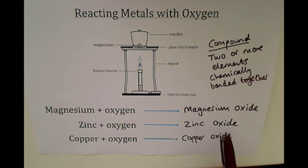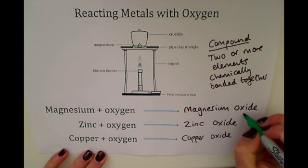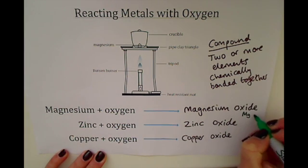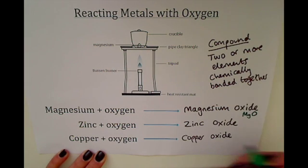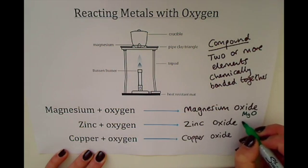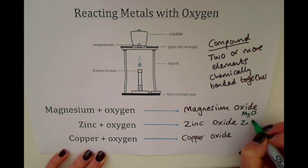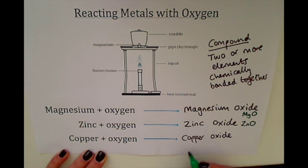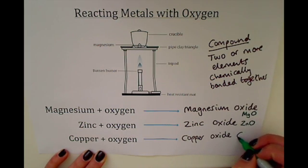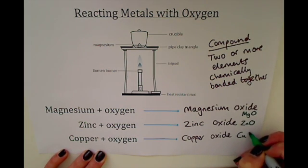If we think about what the chemical formula for these compounds would be, magnesium oxide is MgO, zinc oxide would be ZnO, and copper oxide would be CuO.